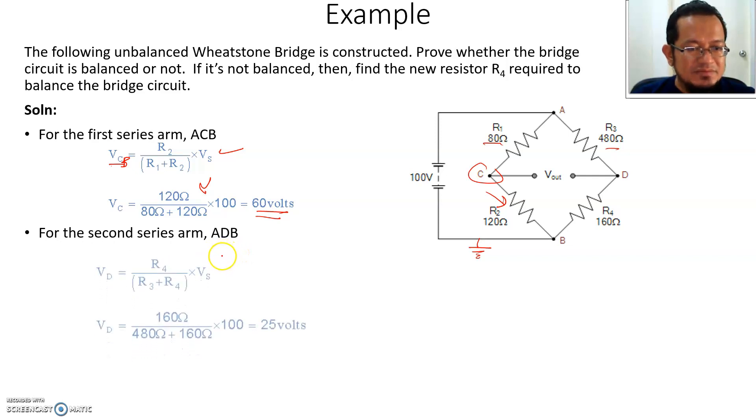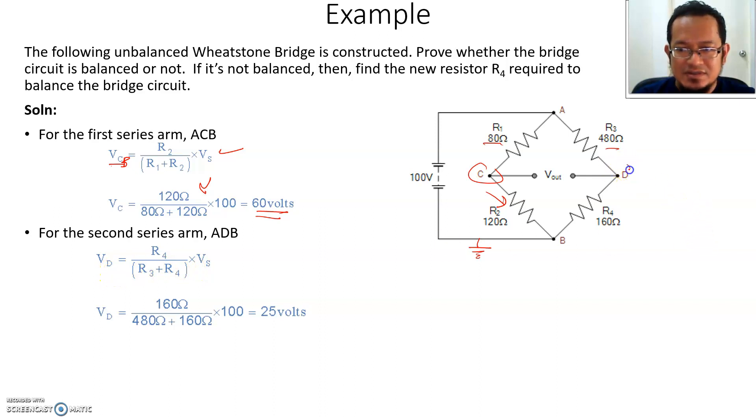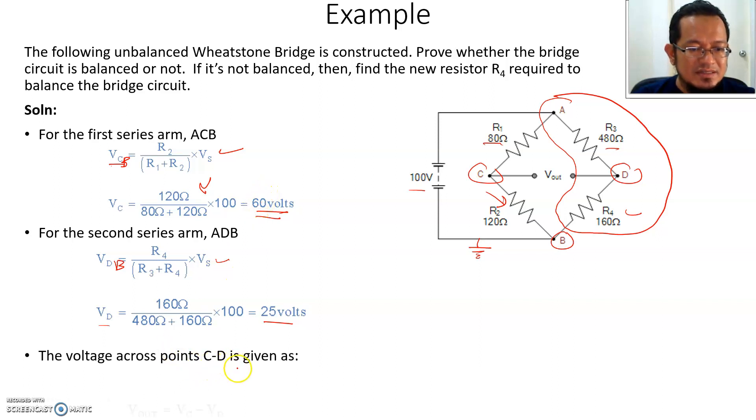For the second series arm, we do the same using the same voltage divider rule. You can find what is this voltage VD. VD means VD to ground. For VD to ground, it's R4 divided by the total resistance in this branch, multiplied by the source voltage, which is 100 volt here. You get VD equals to 25 volts. You can see that the voltage across C and D has a certain value, which is not zero.